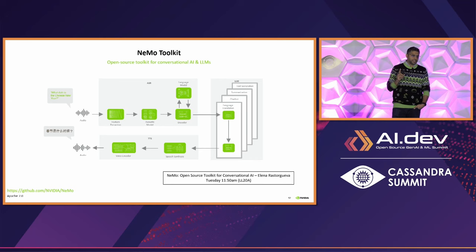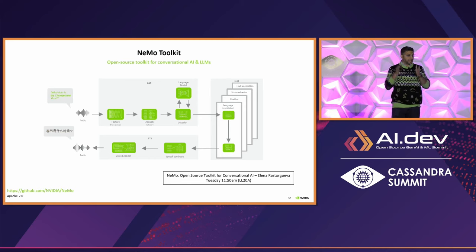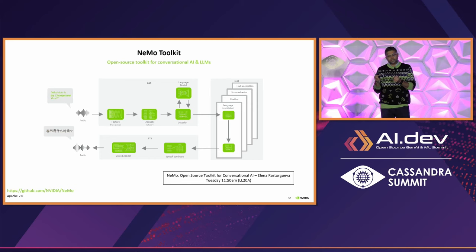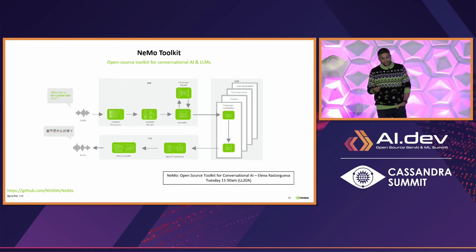Nemo Toolkit — my colleague Elena gave a talk yesterday, you can go back and watch it. Simply, Nemo Toolkit is an open source toolkit for ASR, TTS, and LLMs. If you go in the GitHub repo, you'll also see NLU and a lot of other things you can do. The Nemo Toolkit was inspired by the work of Megatron, so a lot of those techniques are available there. Nemo is a tool for you to train and fine-tune large language models.